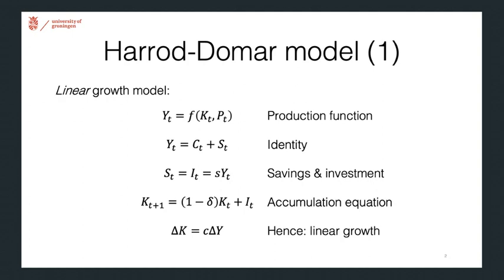The first part of this model is the production function. It shows how output is produced using capital and population. The second is an identity showing that output is either consumed directly or saved. The third one shows that savings are invested in the economy. And for simplicity, we're assuming here that there's a constant savings rate denoted by S.